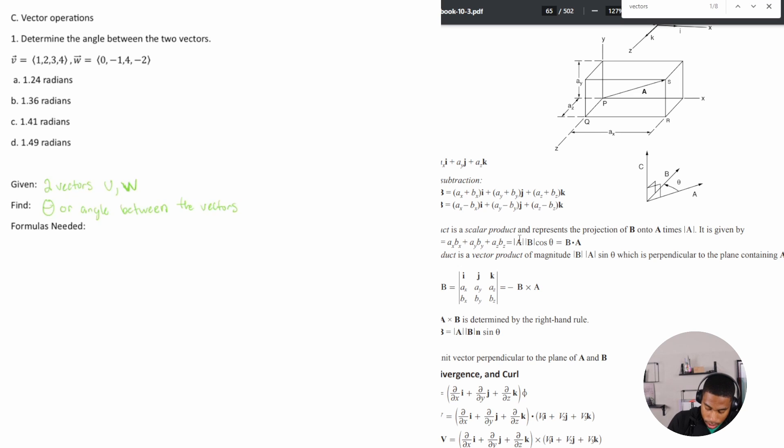Just for the sake of this problem, it would be V magnitude times W magnitude cosine theta is equal to W dot V. All right, so what is V magnitude?